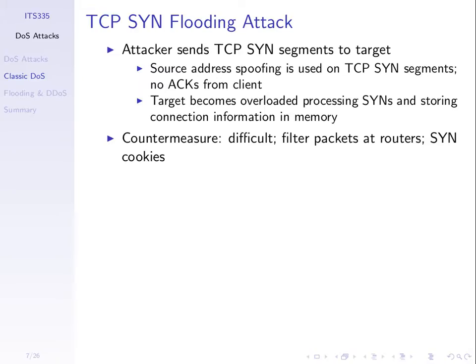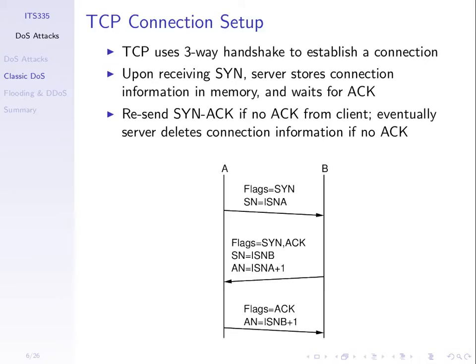The concept is to overflow the memory and CPU at computer B by sending many TCP SYNs, because the way TCP normally works is that it stores some memory for each SYN it receives and expects an ACK to come back. If the ACK doesn't come back — and it will not, because the attacker is not going to send the ACK, especially with a fake source address — the memory is still used up at Computer B.